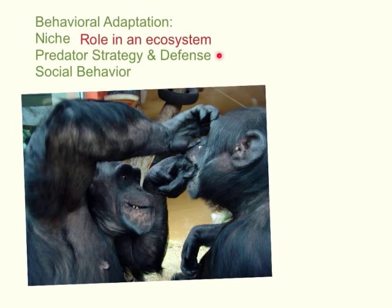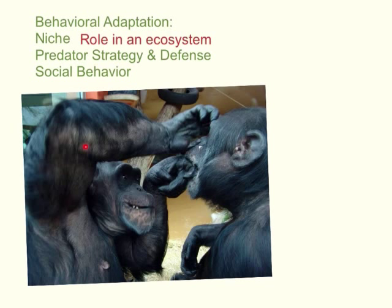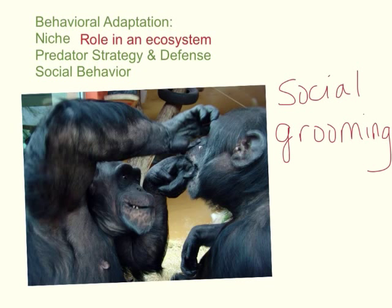Another type of behavioral adaptation relates to predators — perhaps how an animal responds when approached by a predator, or if an animal is predatory, how it attacks other animals to get food and survive. The last type of behavioral adaptation is social behavior. Chimpanzees have a very social environment; they live in a community with specific social behaviors that the community accepts. In the video, we saw social grooming — a very specific behavior that helps them survive in their community or population.